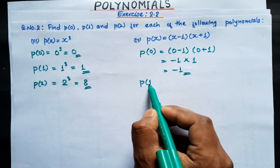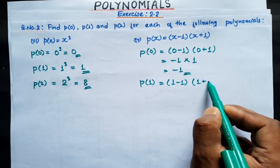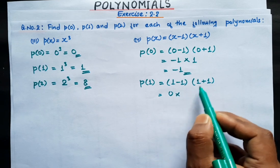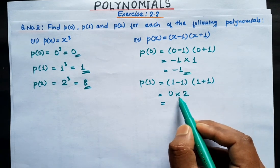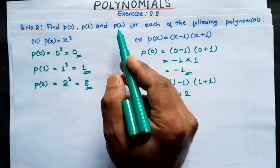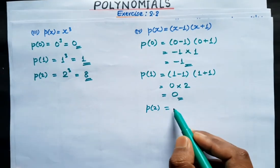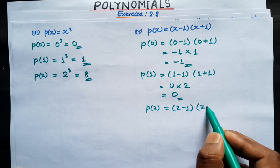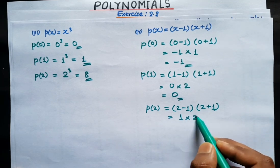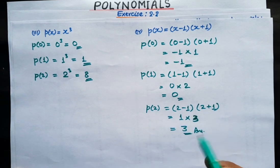For P1: put x = 1, giving (1 - 1)(1 + 1) = 0 × 2 = 0. So P1 = 0. For P2: put x = 2, giving (2 - 1)(2 + 1) = 1 × 3 = 3. So P2 = 3. That completes the answer for question number 2 of exercise 2.2.